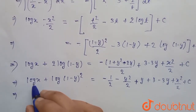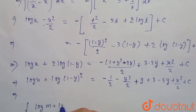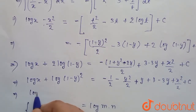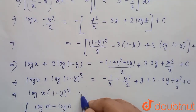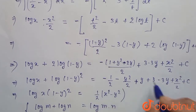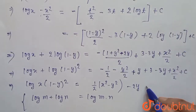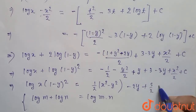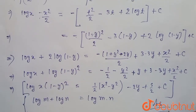Using the log property log m + log n = log(mn), we write log[x(1 - y)²] on the left side. The right hand side becomes (1/2)(x² - y²) - 2y + 5y/2 + c. This is our final solution of the differential equation.